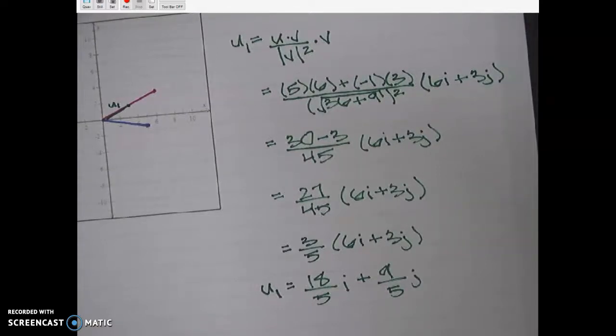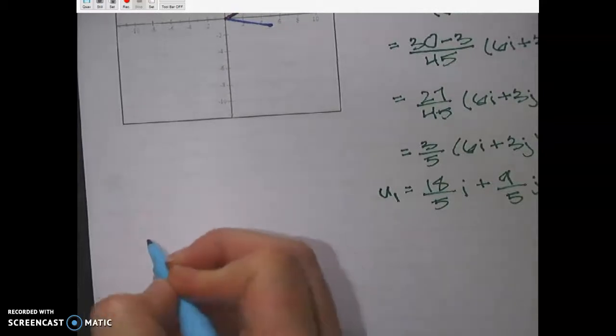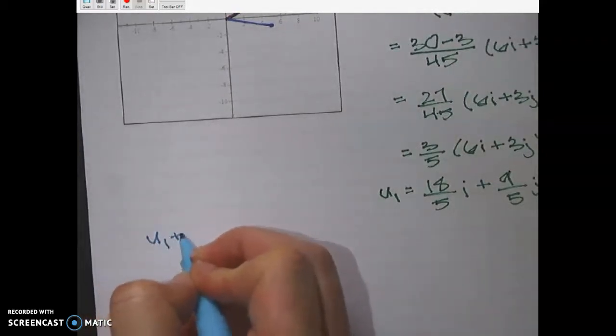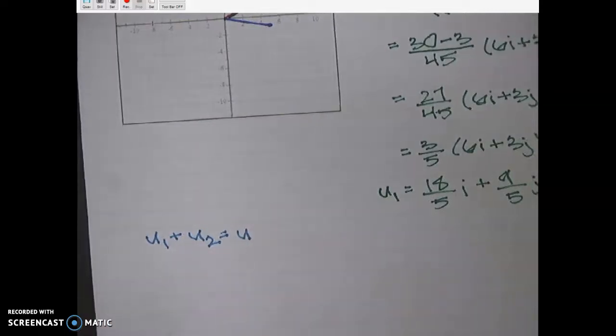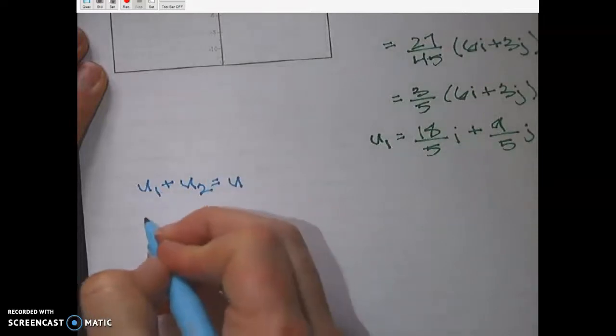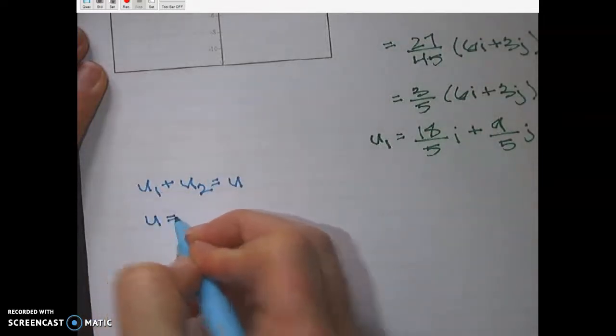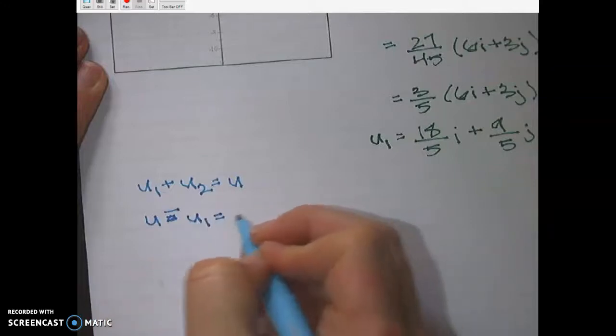Now, the nice thing is, to find the perpendicular part, all we have to do is subtract, because u1 plus u2 should give us vector u. So, writing it differently, u minus u1 should give me u2.